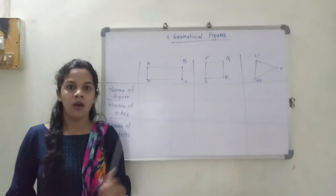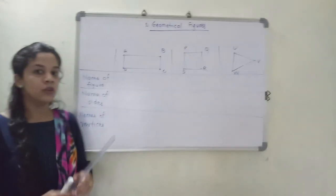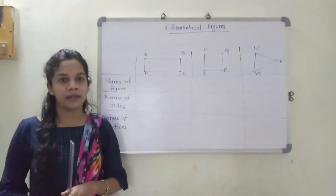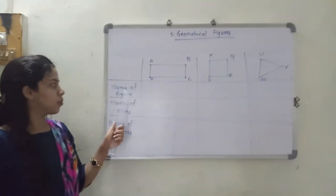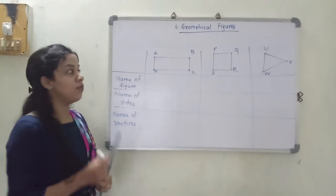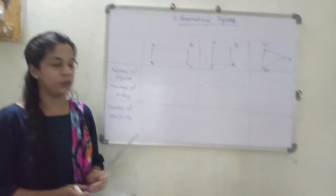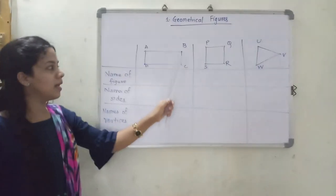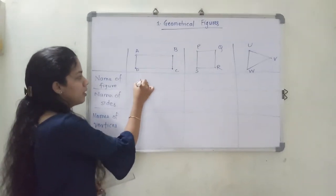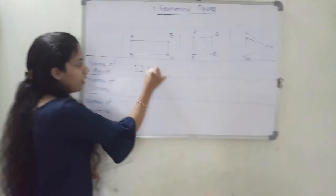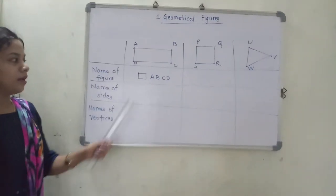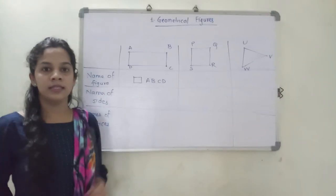So we have seen the vertices and the edges or sides. Now we will complete this table - you are going to tell me the answers. You can see a rectangle here. They have asked the name of the figure. We know it is a rectangle, but right now there is a specific name given to it. You can see A, B, C and D written, so you are going to write the name as rectangle ABCD.